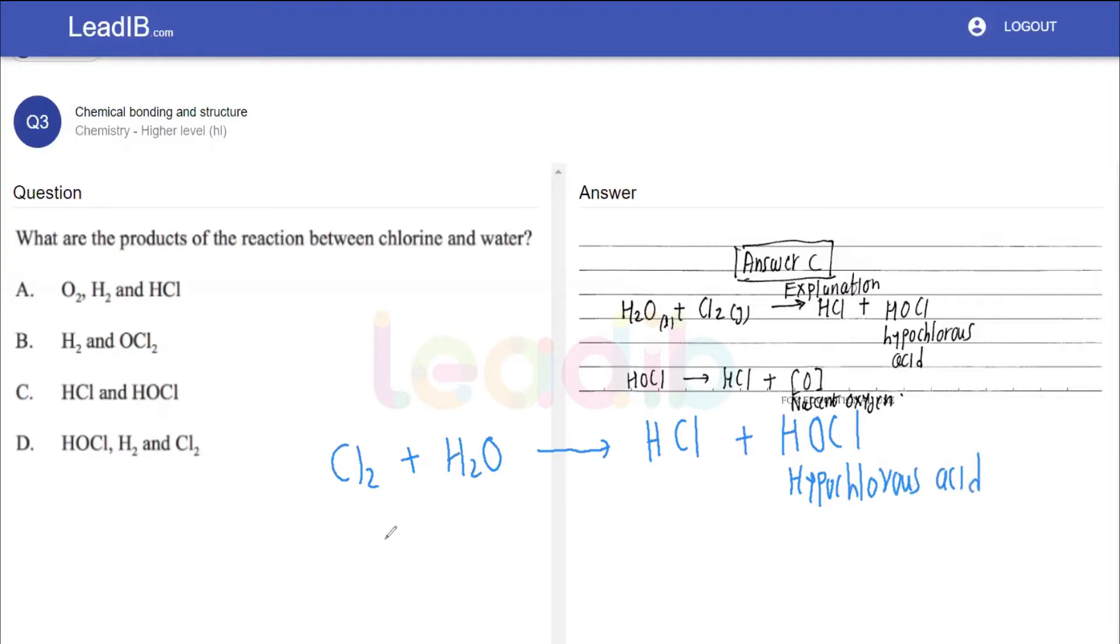What is the interesting property of hypochlorous acid? It is unstable at ambient temperature and will form HCl, but more importantly, nascent oxygen.